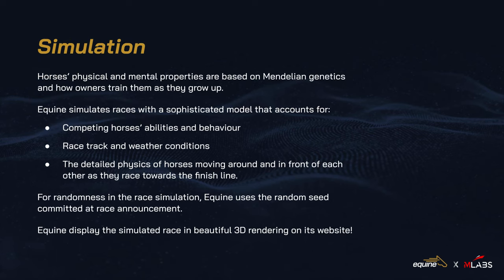When it's time for the race to begin, equine applies its sophisticated model to simulate the horse race. The outcome of the race depends on the racing horse's physical and mental abilities, the jockey skills, and the race track and weather conditions. All of these are combined together with the random seed and fed into the simulation engine, which accounts for the detailed physics of horses sprinting around and in front of each other towards the finish line. Spectators can watch a beautiful 3D rendering of each race on equine's website.